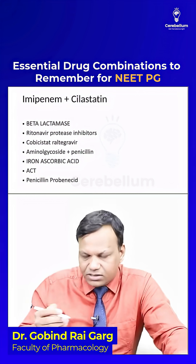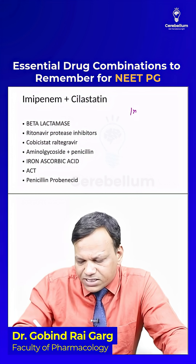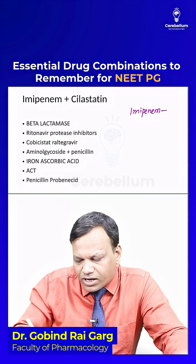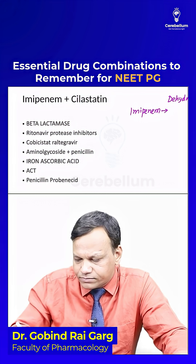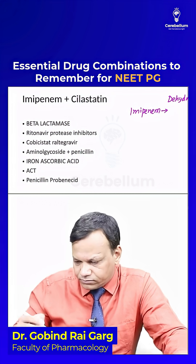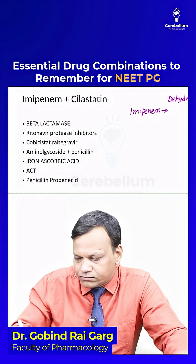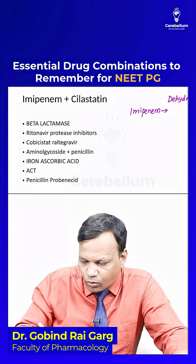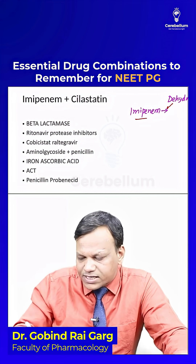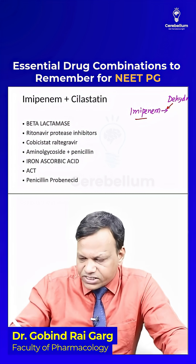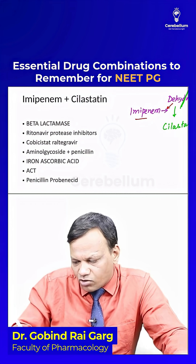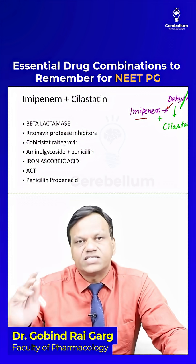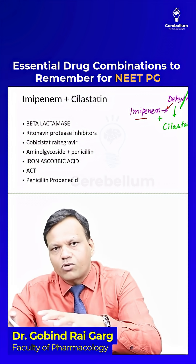Imipenem is an antibiotic, but it is metabolized by an enzyme called dehydropeptidase, which our kidneys produce. So whenever we give imipenem alone, it is broken down by this enzyme. To prevent this, we give a drug that inhibits this enzyme — that drug is cilastatin. So imipenem is always given in combination with cilastatin so that imipenem is not broken down and becomes effective.